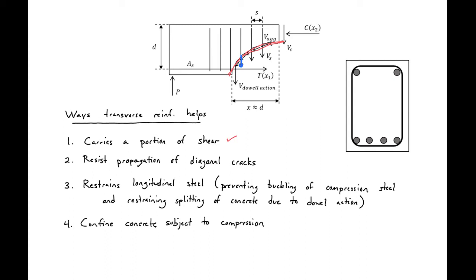Our transverse reinforcement is also going to restrain our longitudinal steel. It'll do this in two ways. For our compression steel, it's going to prevent buckling. When we have our bar and we place compression on it, that bar is going to want to buckle. When we put transverse reinforcement in the section, it's going to restrain this buckling. So we'll have concrete resisting buckling on the bottom side and our transverse reinforcement restraining buckling on the top side.